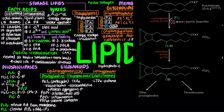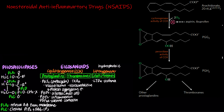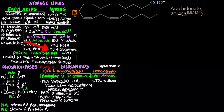Prostaglandins and thromboxanes are synthesized by cyclooxygenase (COX), whereas leukotrienes are synthesized by lipoxygenase. Non-steroidal anti-inflammatory drugs (NSAIDs) such as aspirin and ibuprofen act by inhibiting cyclooxygenase, thereby blocking the production of pro-inflammatory prostaglandins and thromboxanes.